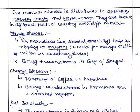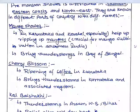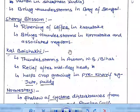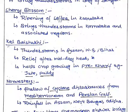Pre-monsoon showers are distributed across the southern, eastern coast, and northeastern coast of India. They are known by different names in different regions. Mango showers occur in Karnataka and Kerala; cherry blossom showers also occur in Karnataka. These are mainly in southern India along the coasts.